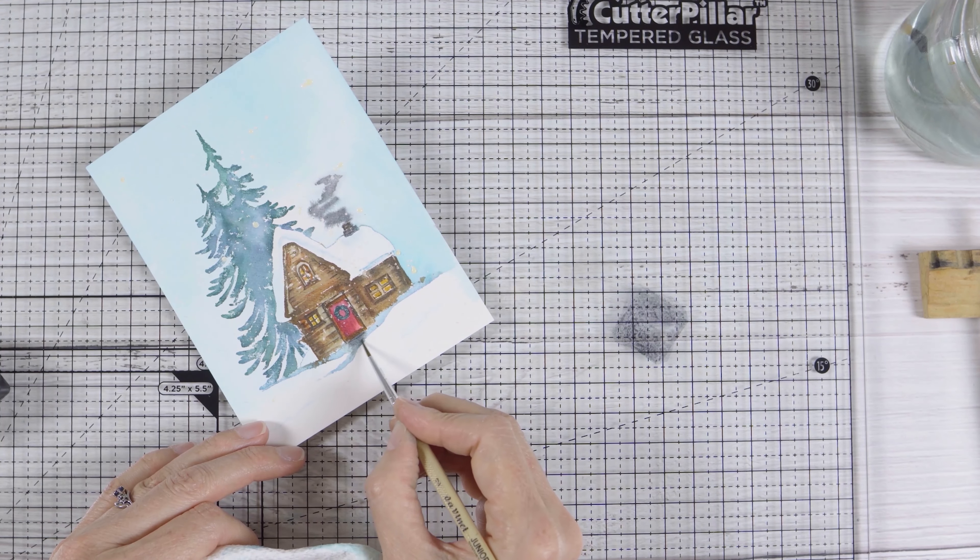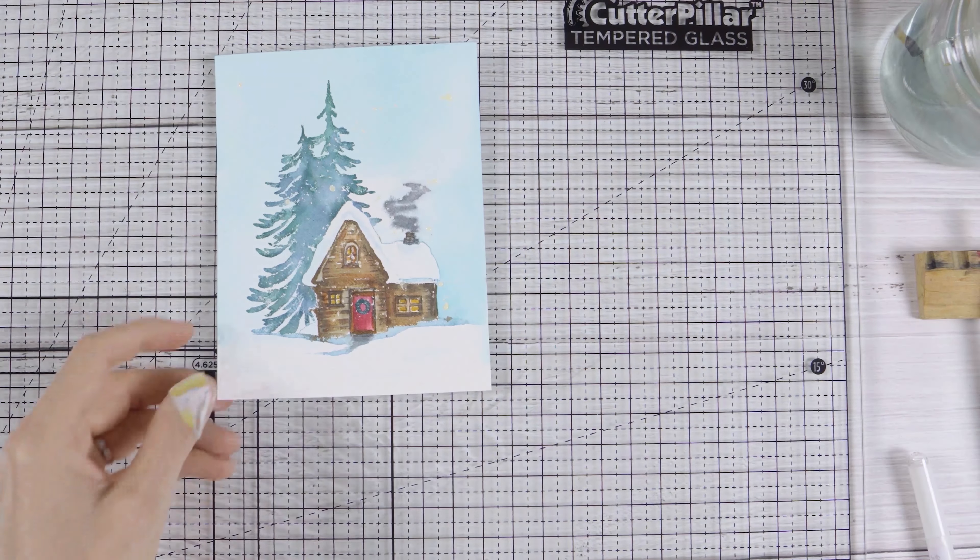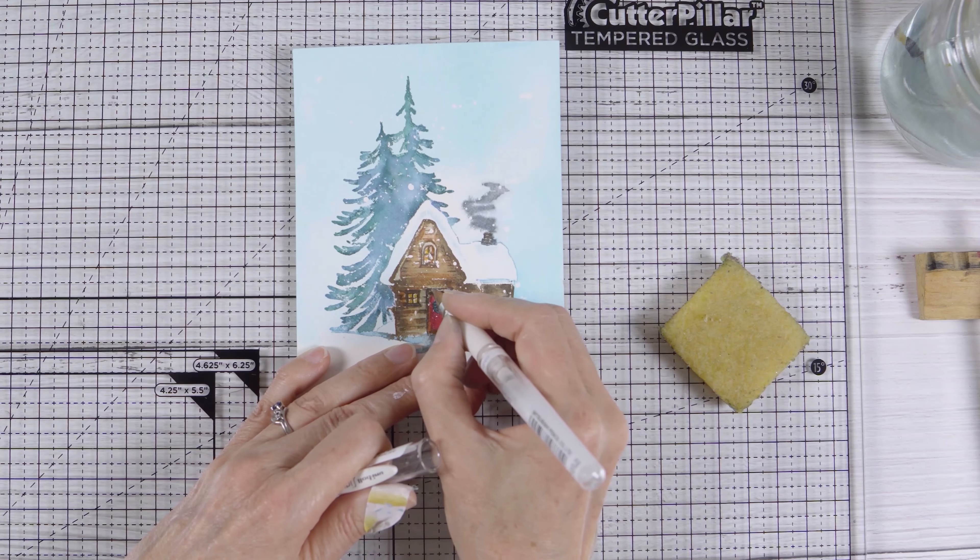Once your panel is totally dry from whatever your last stamping or painting was, you can remove the masking fluid. I use a gum eraser and just remove it all. And now that the surface of the paper is flat, no masking fluid, I can just add some little more snowy details with a white gel pen.